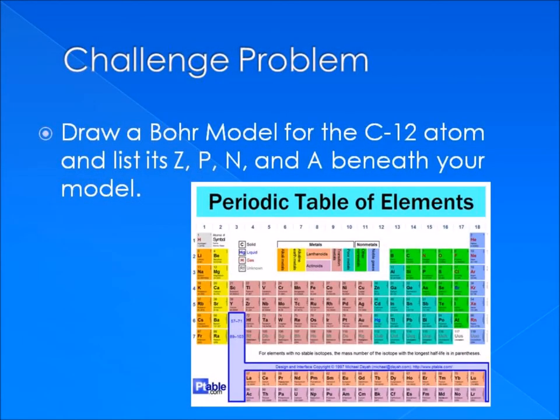We'll finish up today with a challenge problem. I want you to draw a Bohr model for the neutral carbon-12 atom and list its Z, P, N, and A beneath your model. Here's a hint: this atom is neutral, so you want the number of electrons in your shells to be equal to the number of protons in your nucleus. Take a few minutes to do that and submit your answer in the form of a picture to me over email.